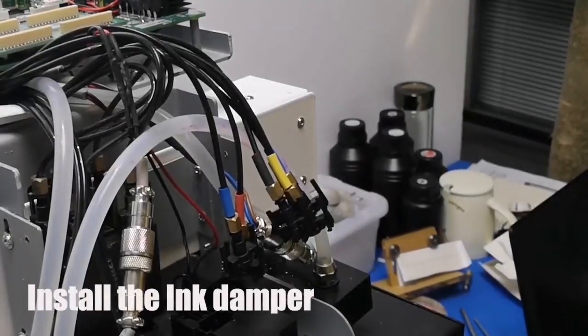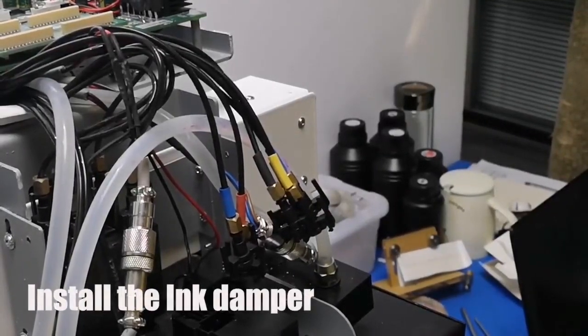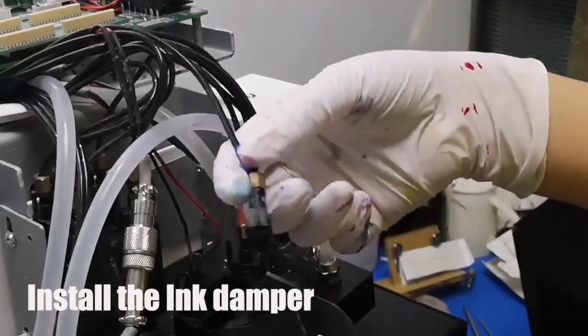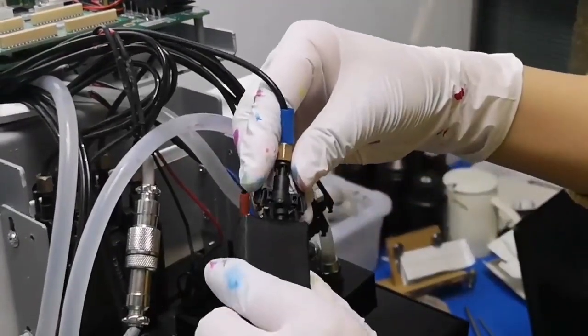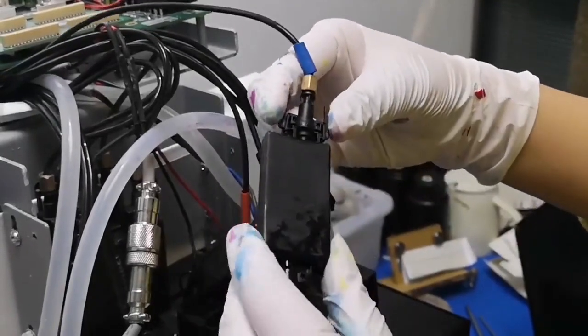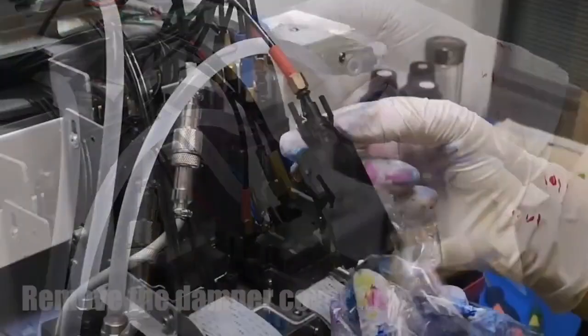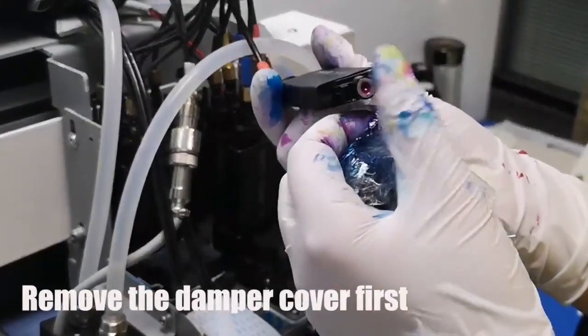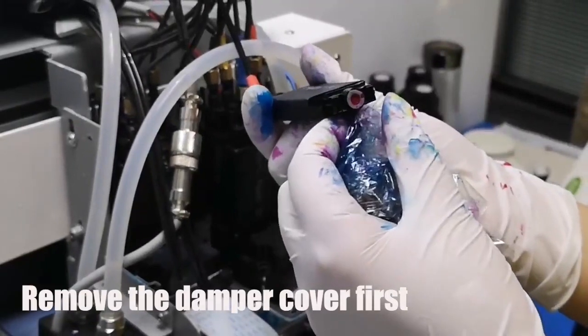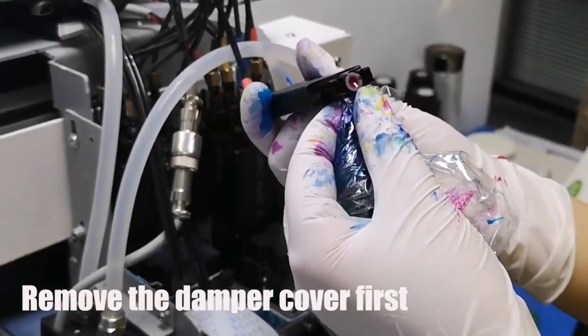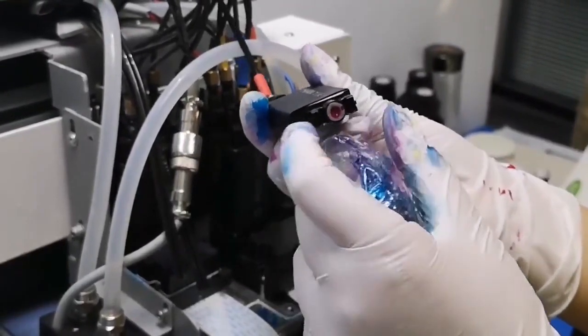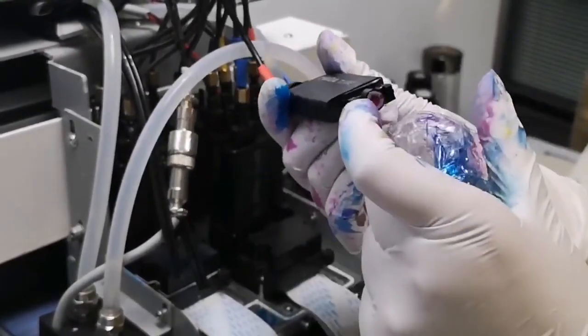After you finish this step, you install the dampers. Install the clean dampers you have. Lock it. Make sure it's locked. Before you install the ink dampers, you will find that there is a black thing over here. You need to take it off so that you will see the silicon. It has a black cover, you need to take it off.